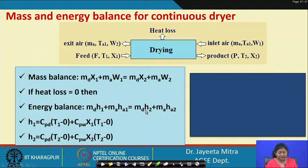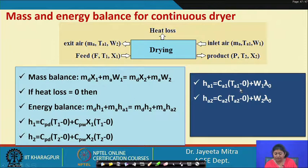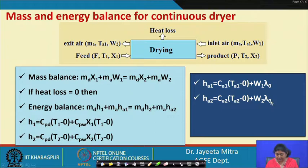Taking reference temperature as 0°C, H₁ = CPD × (T₁ − 0) + Cpw × x₁ × (T₁ − 0), where CPD is specific heat of dry material and Cpw is specific heat of moisture in food. Similarly H₂ is calculated at temperature T₂. For air: Hₐ₁ = Cₐ₁ × (Tₐ₁ − 0) + W₁ × λ₀, and Hₐ₂ = Cₐ₂ × (Tₐ₂ − 0) + W₂ × λ₀, where λ₀ is the latent heat of vaporization.